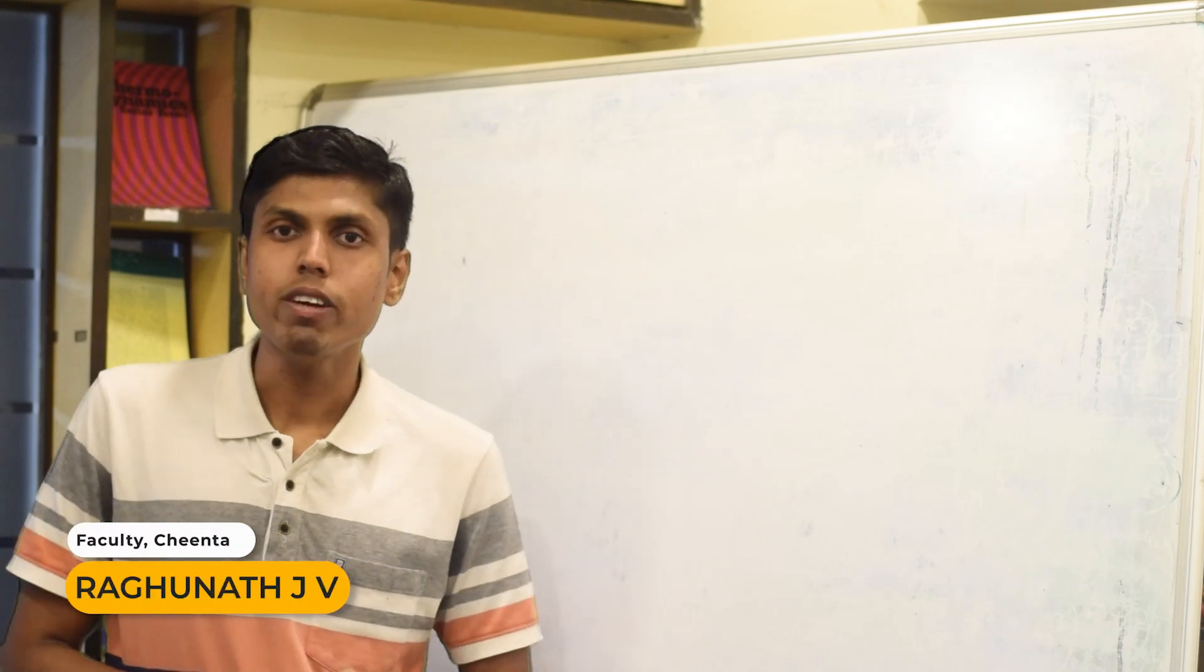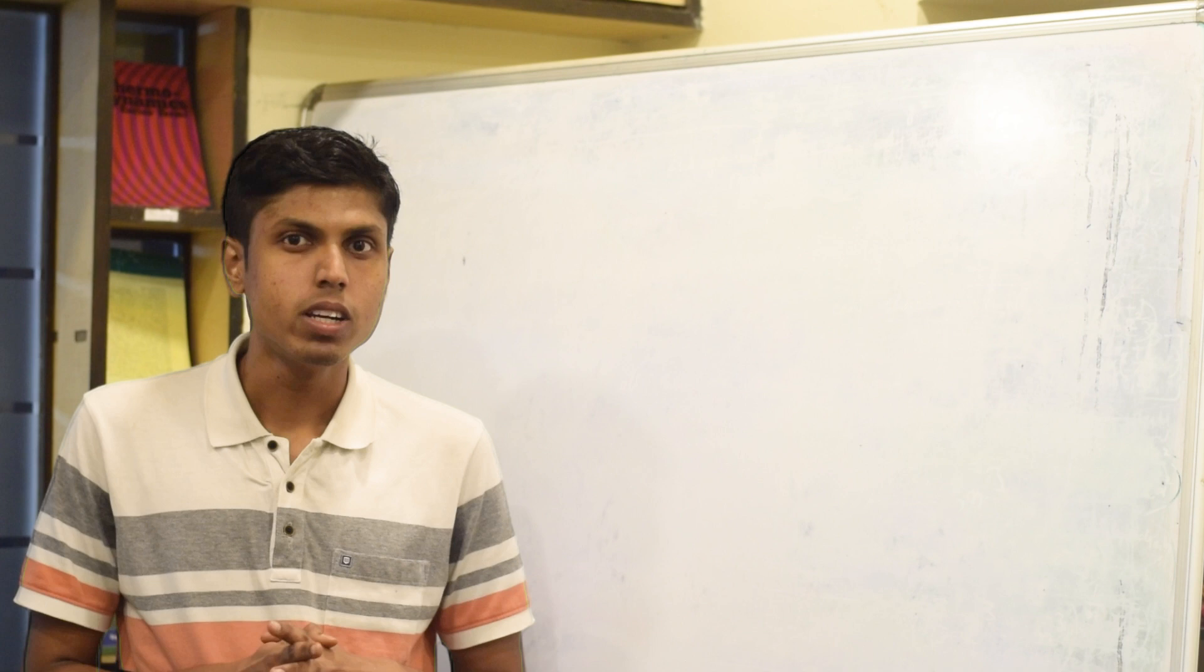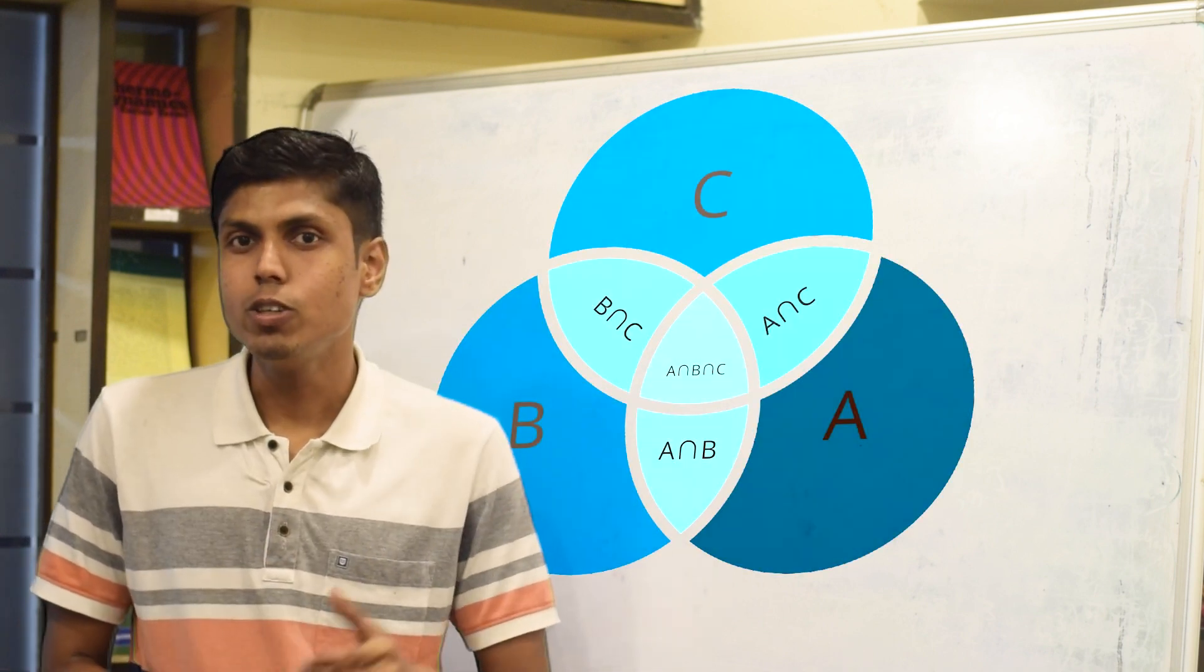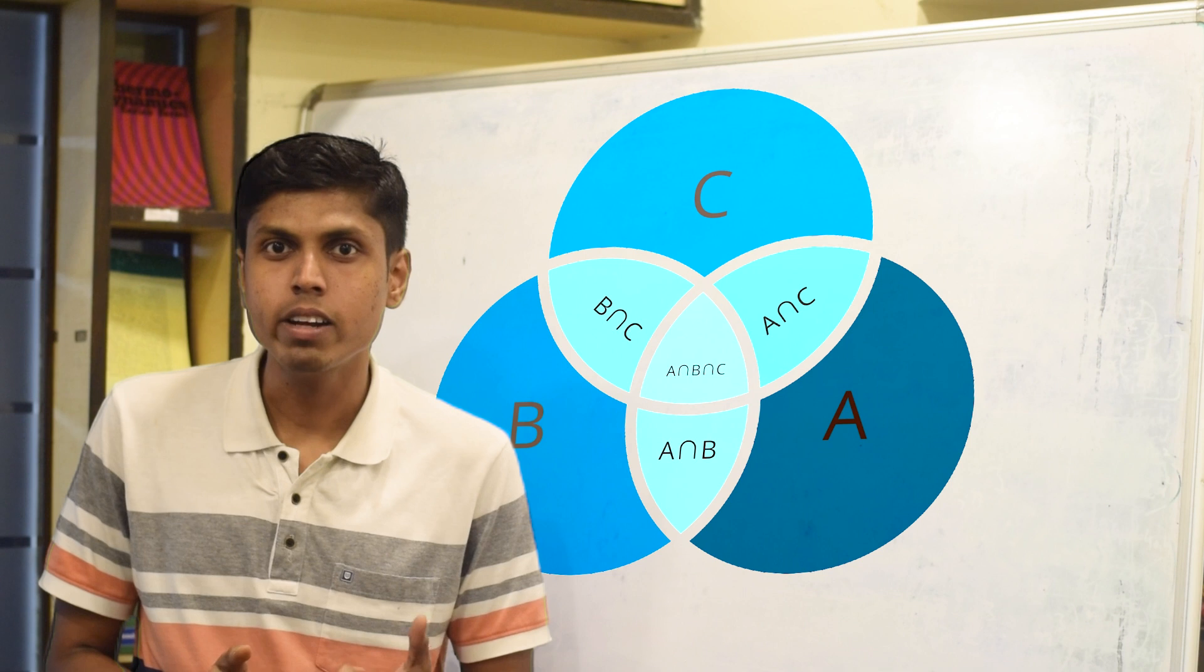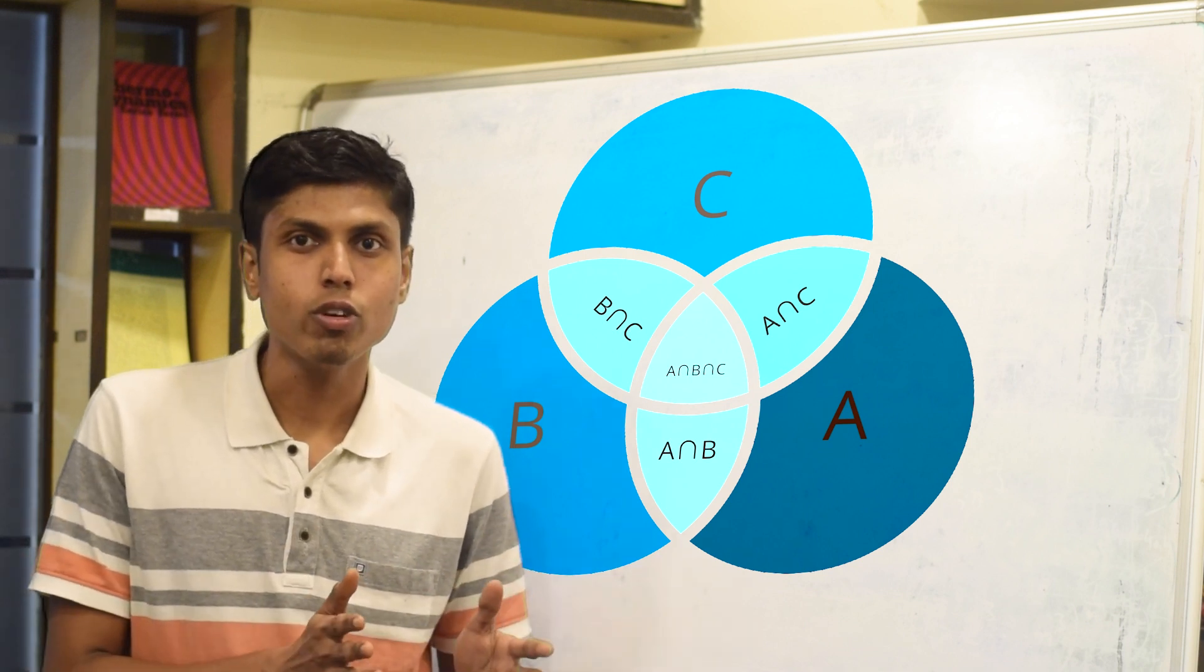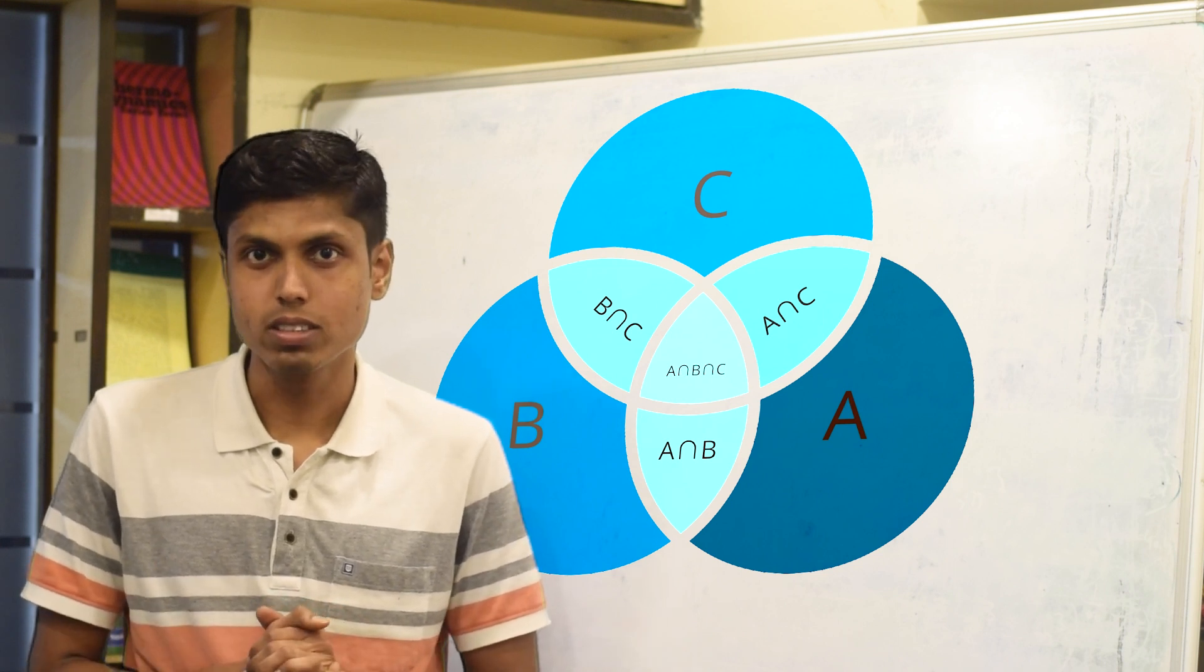Hello everyone, so today we are going to discuss an important concept which is called the principle of inclusion and exclusion. This is a useful tool in Olympiad Combinatorics and particularly for exams like AMC, IOQM, and SMO contests.